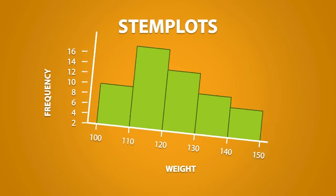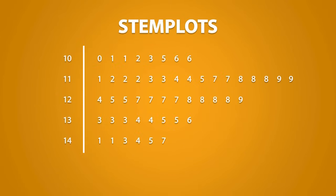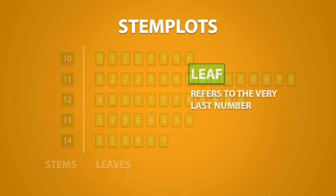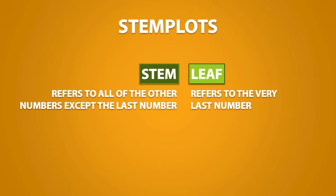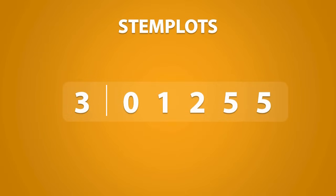Now stem plots are like histograms, except they show each data point. Stem plots consist of stems and leaves. A leaf refers to the very last number, and a stem refers to all of the other numbers except the last number. Stems and leaves are usually separated by a line. For example, let's look at the number 117. The leaf is the last number, so this would be 7. The stem is all of the other numbers, so the stem is 11. On a stem plot, this would be written as so. Now let's look at the number 69. Using the same rules, we would get a leaf of 9 and a stem of 6. And on a stem plot, this would be written as so.